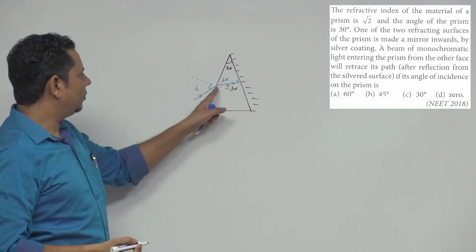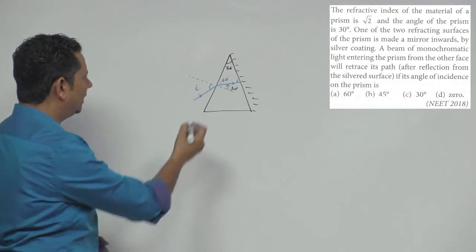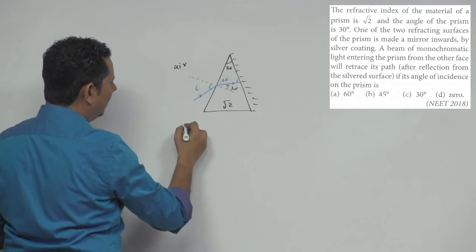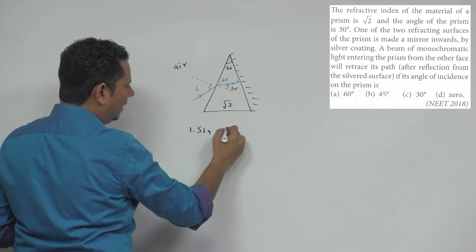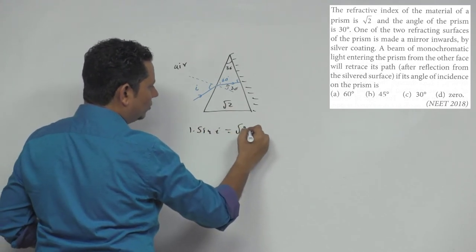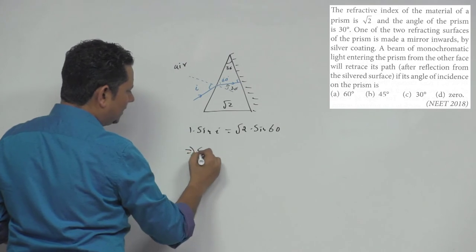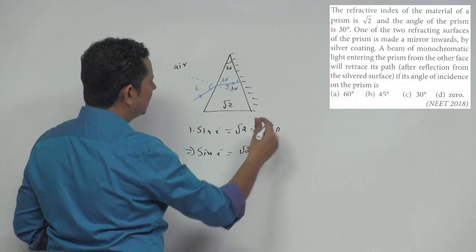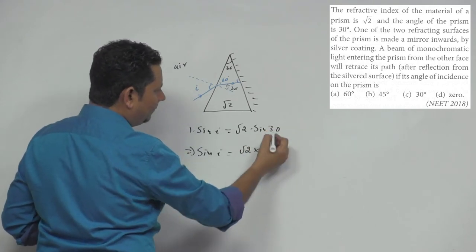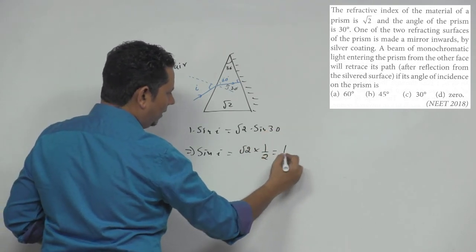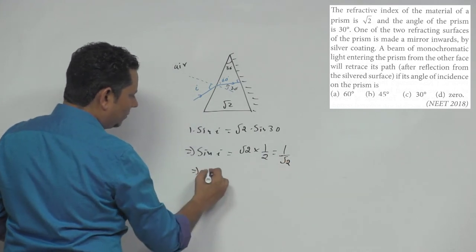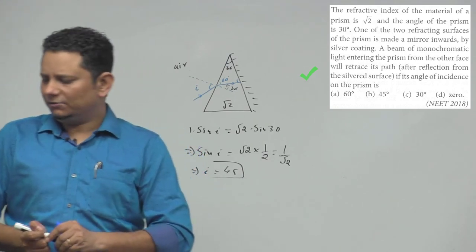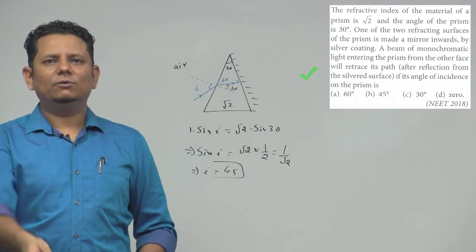Now at this point we apply Snell's law. Outside is air, so refractive index is 1, and the material has refractive index root 2. So we write: 1 × sin(i) = root 2 × sin(30°). This gives sin(i) = root 2 × (1/2) = 1/root 2, which implies angle i = 45 degrees. So the angle of incidence should be 45 degrees, which means option B is the right answer.